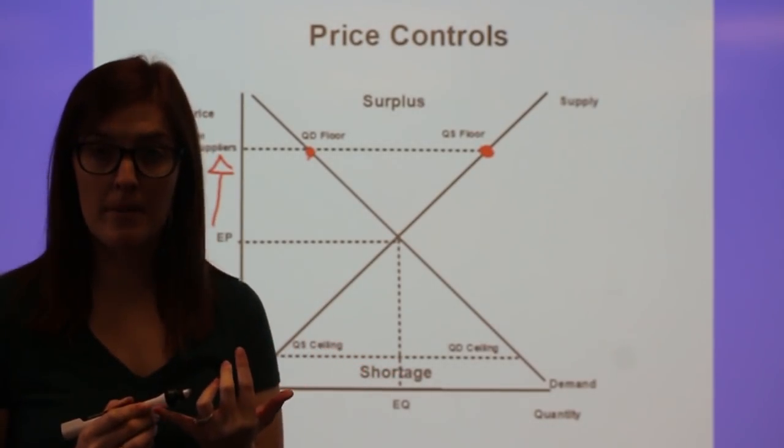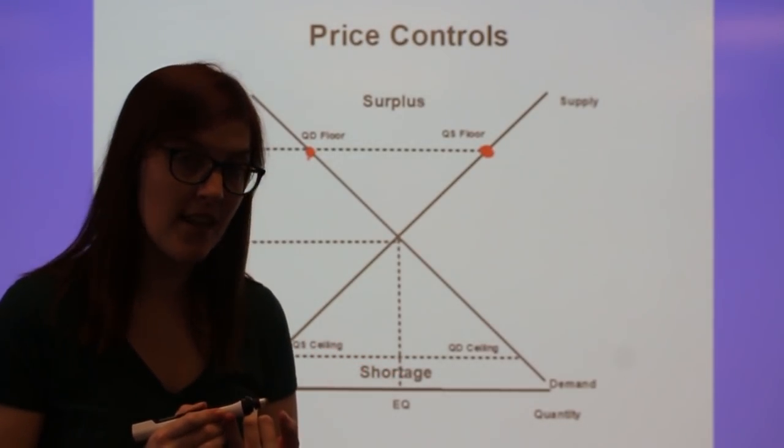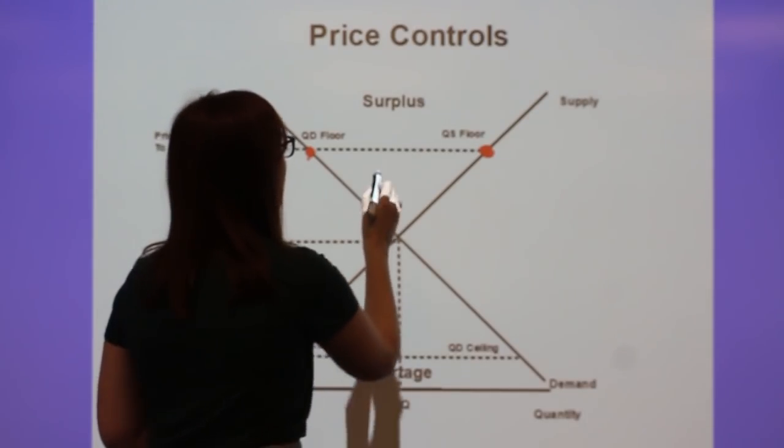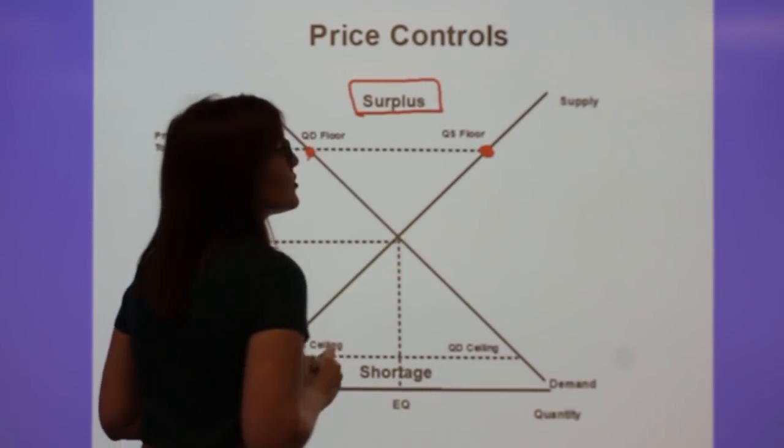So what happens if consumers don't want to buy it, but producers do want to sell it, and it ends up creating this disequilibrium scenario called a surplus.